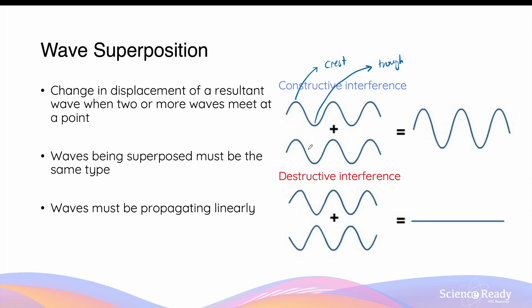So when the two waves meet at a point in such a way that the crests of the two waves and the troughs of the two waves meet at the same position, then this is where they undergo constructive interference, where the amplitude of the two waves are added together to form the resulting wave whose amplitude is now greater than before. Constructive interference requires the crest and the crest to meet up and the troughs to also meet up.